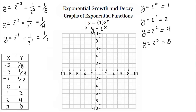Now we can plot these points: negative 3 and 1/8, negative 2 and 1/4, negative 1 and 1/2, 0 and 1, 1 and 2, 2 and 4, and 3 and 8. I can connect these points with a smooth curve, and my graph will look something like that.